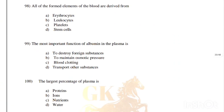All of the formed elements of the blood are derived from: erythrocytes, leukocytes, platelets, or stem cells. Correct answer is option D, stem cells.